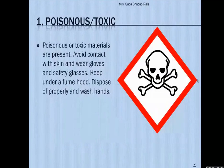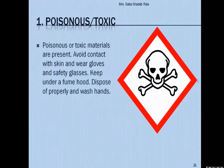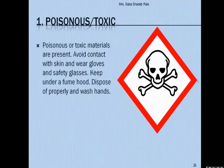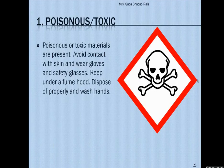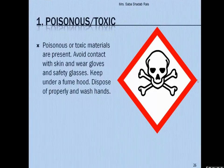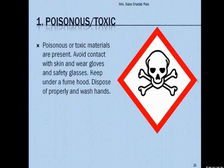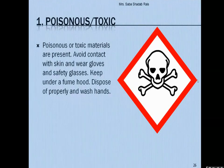Now we will discuss each symbol. First is the poisonous or toxic symbol. All chemicals or their mixtures that are harmful to the environment or human health if inhaled, swallowed, or absorbed through the skin or various ports of injury are called toxic chemicals. Some of these chemicals express toxicity only after long-term contact — these are called chronic toxic chemicals.